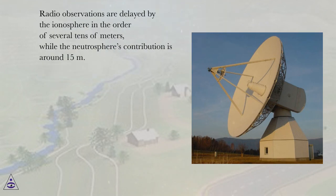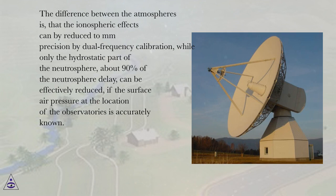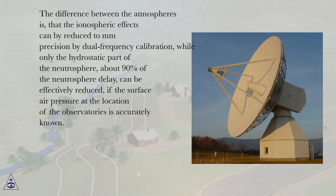Radio observations are delayed by the ionosphere in the order of several tens of meters, while the neutrosphere's contribution is around 15 meters. Both are primarily depending on the elevation angle of the observation, since the path length through a spherical shell is approximately proportional to the sine of the elevation angle. The ionospheric effects can be reduced to imprecision by dual frequency calibration, while only the hydrostatic part of the neutrosphere — about 90% of the neutrosphere delay — can be effectively reduced if the surface air pressure at the location of the observatories is accurately known.